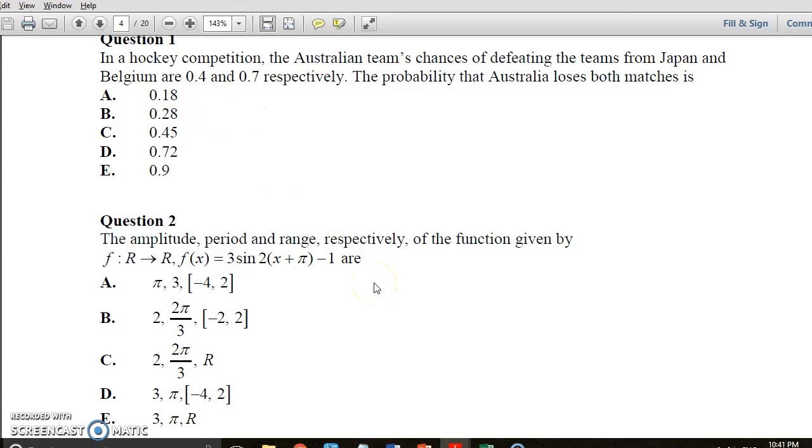Okay, question 2. The amplitude, period and range respectively of a function are given by... Now amplitude we know we find the amplitude of whatever we've got in the front here. So it's three, so only one of these here has three at the front, and it's these two here. Now it also tells us the range, so the period and range.